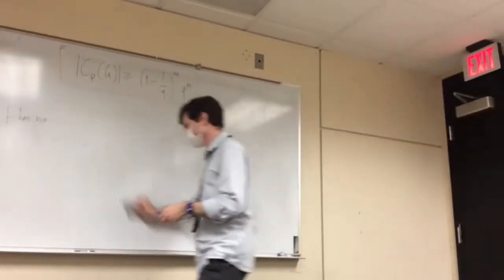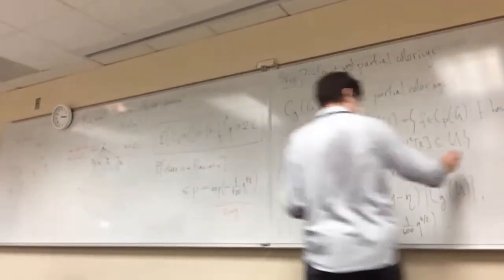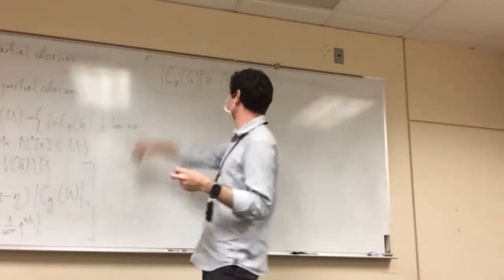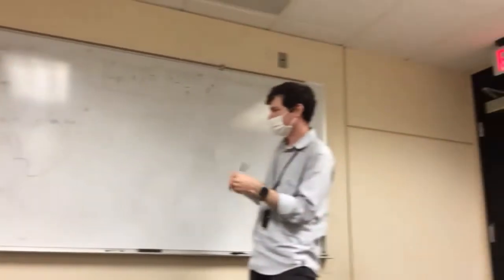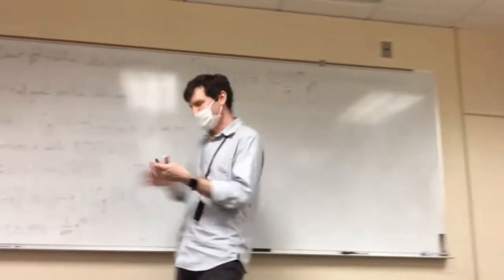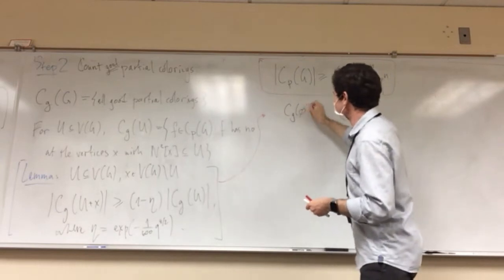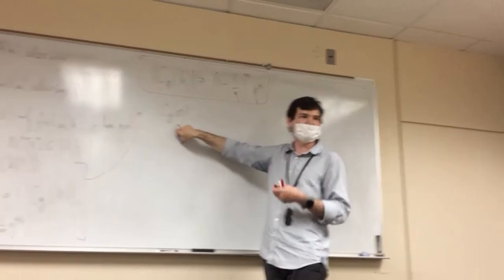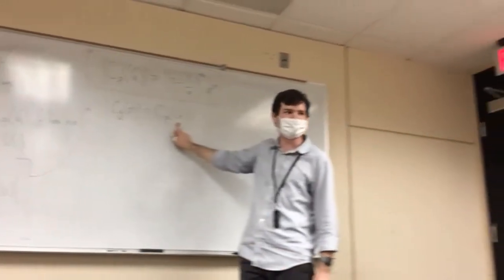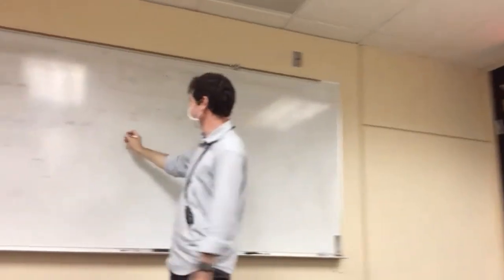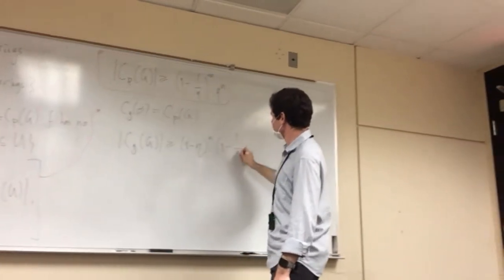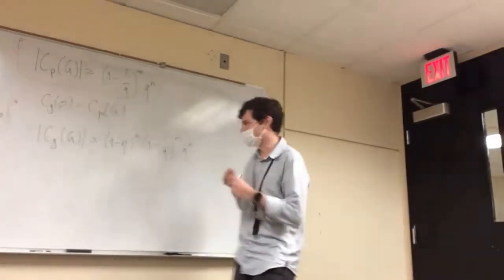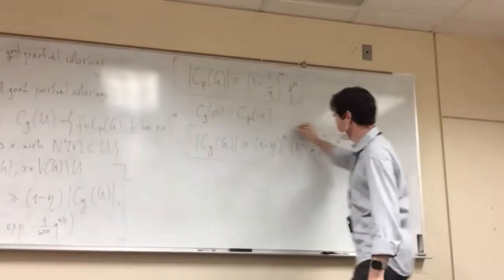This is where we use the Rosenfeld technique. Combining this lemma with the lower bound on total partial colorings: we start with U empty — C_G of the empty set is just all partial colorings of G, which we have a lower bound on. We do the inductive argument adding vertices one by one, and this shows that the number of good colorings of G is at least (1 - eta)^n * (1 - 1/q)^m * q^n — the bound we had for all partial colorings with a small extra error term.